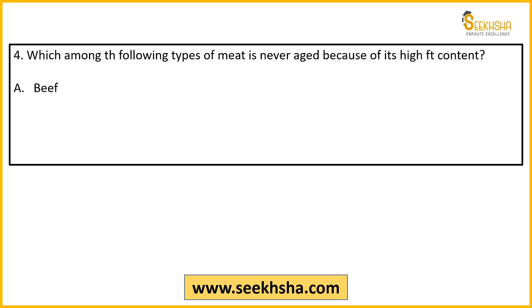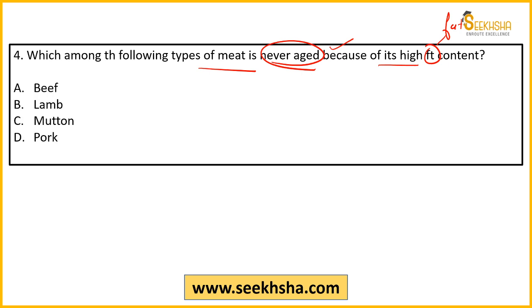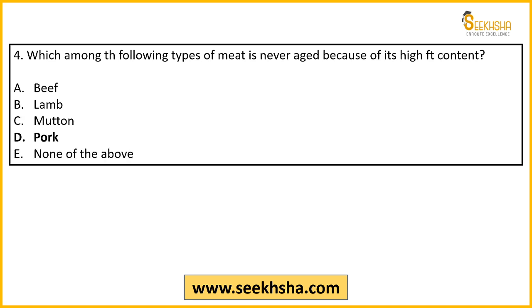Fourth question: Which among the following types of meat is never aged because of its high fat content? You should also know what aging of meat means. The answer here is pork — swine meat is never aged. So the answer is option D — swine meat aging never happens.